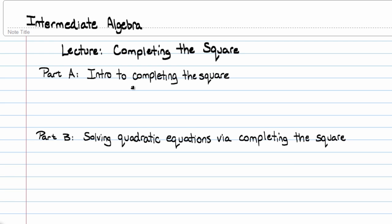Hello, my name is Roy Simpson. I'm a professor of mathematics at Cosumnes River College in Sacramento, California. In this lecture, we're going to talk about completing the square.